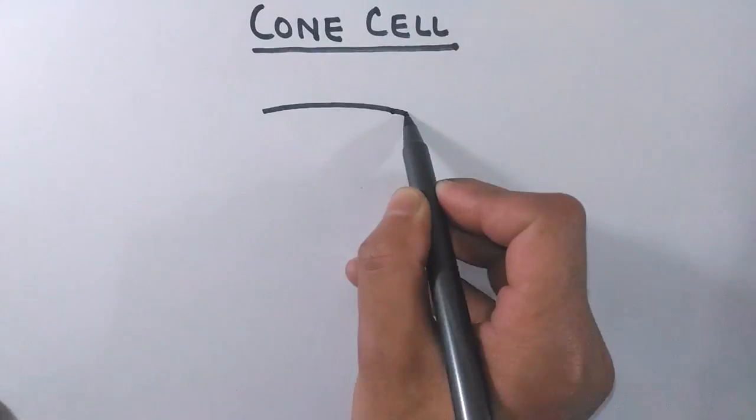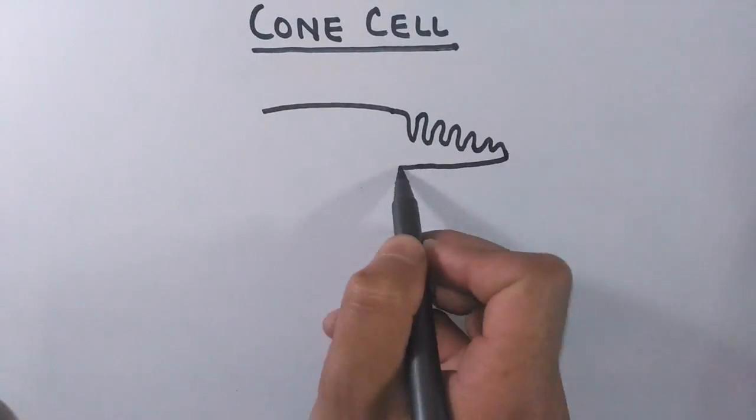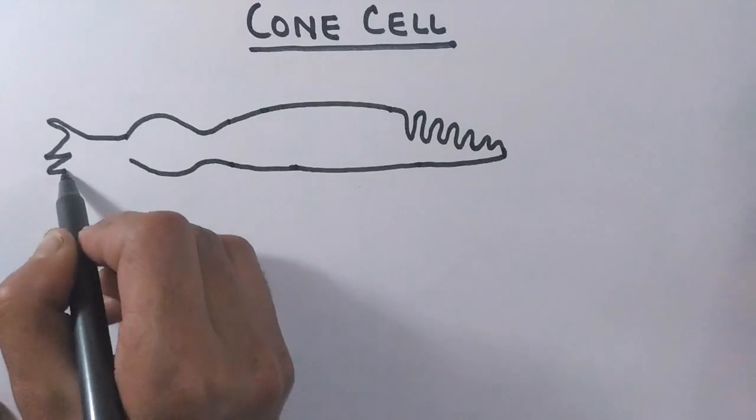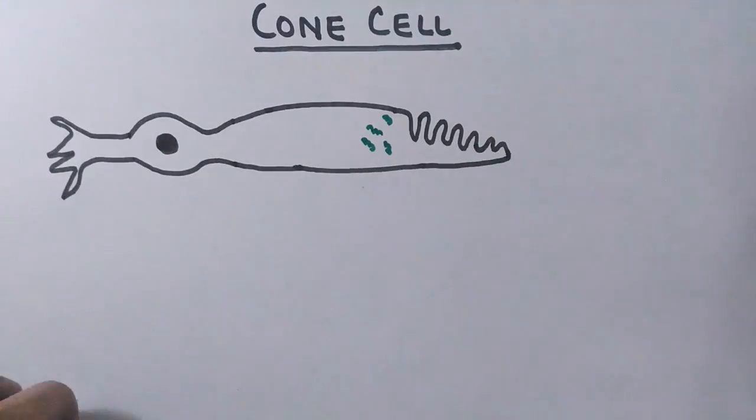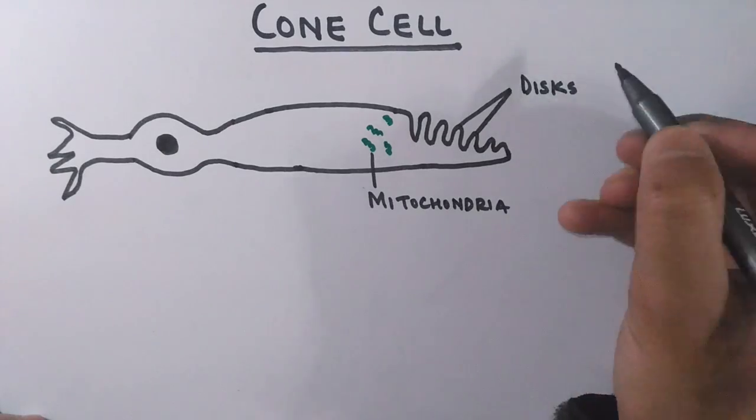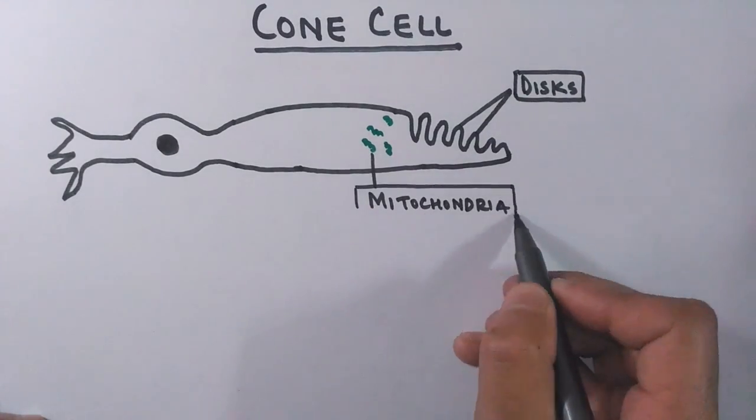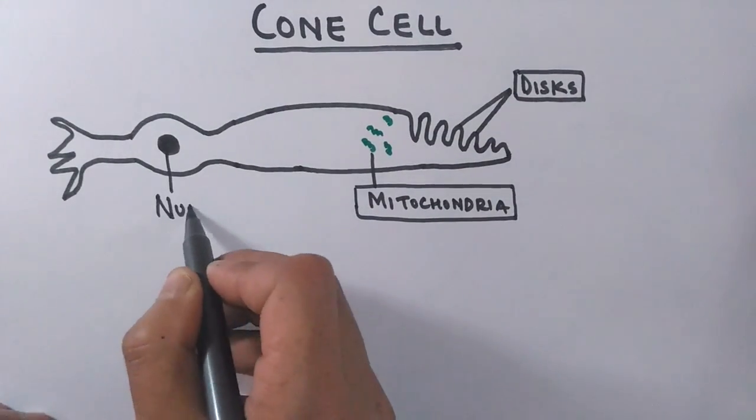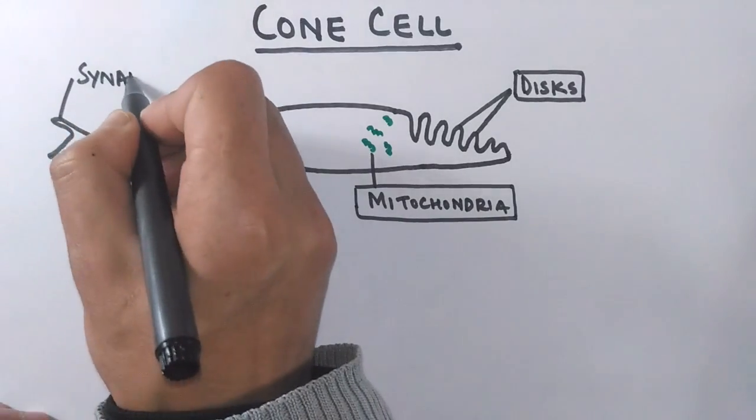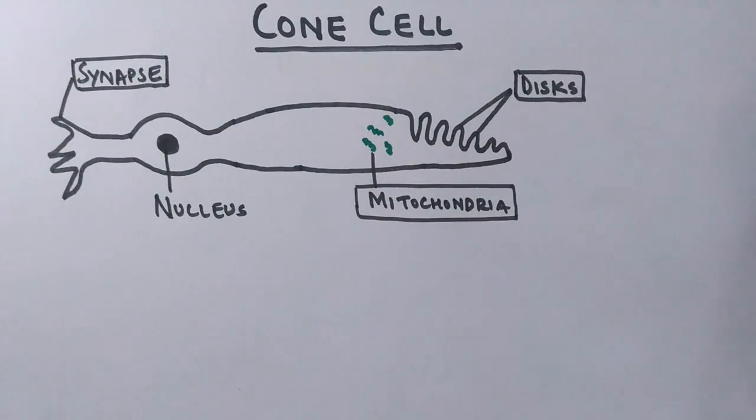First of all, let's see the structure of the cone cell. Here in the structure of the cone cell, you can see the shape is tapering towards the front end and it bears mitochondria. In the front it has a disc, and it bears a nucleus in its body, and terminally it has a synaptic end.